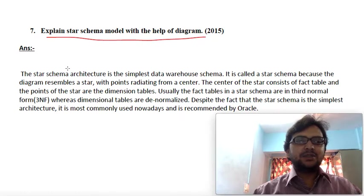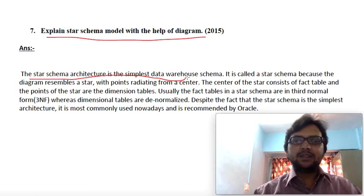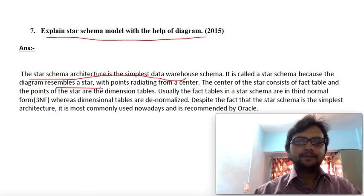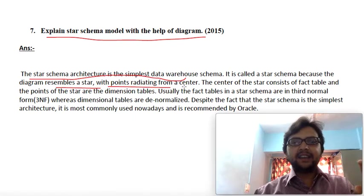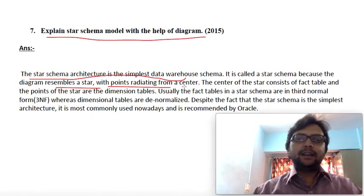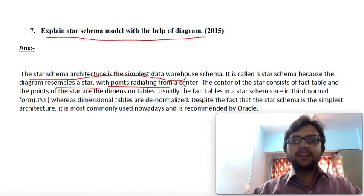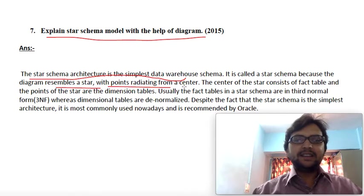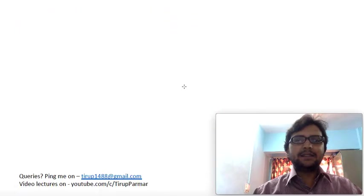When we arrange tables in a star fashion, it is called a star schema. A star schema architecture is the simplest data warehouse structure. It is called a star because the diagram resembles a star with points radiating from the center. In the center, there is a central fact table connected to all other dimension tables through relational primary key-foreign key relationships.